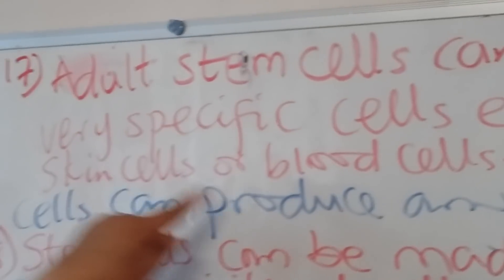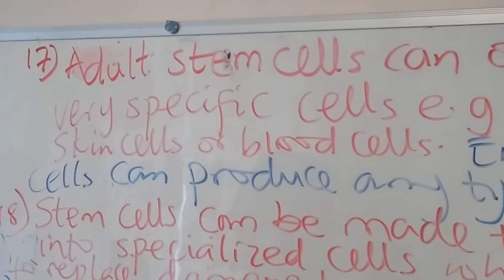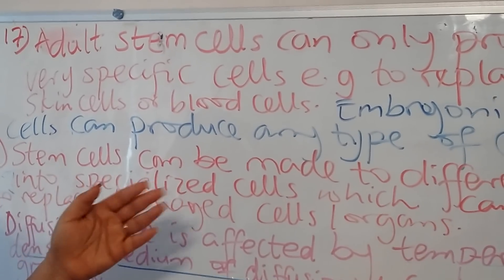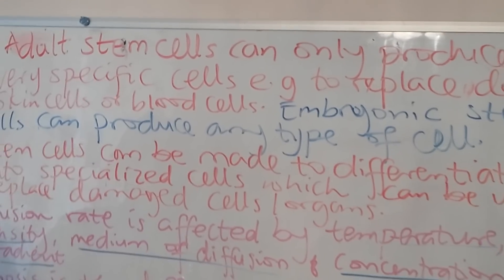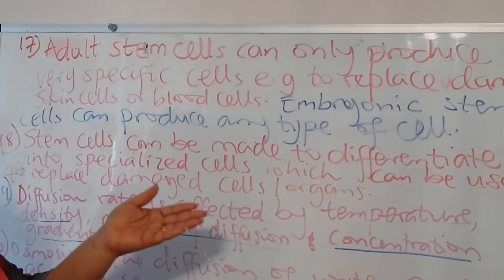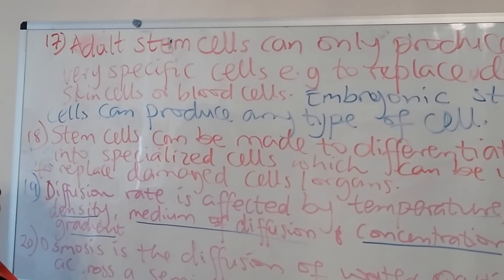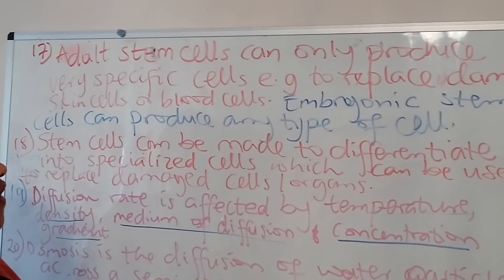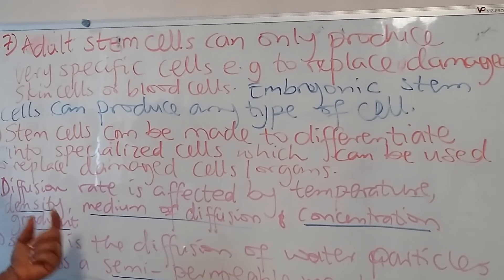Adult stem cells can only produce very specific cells. For example, they can be found in the bone marrow of a human being and can be used to replace damaged blood cells, or used to replace damaged skin cells.